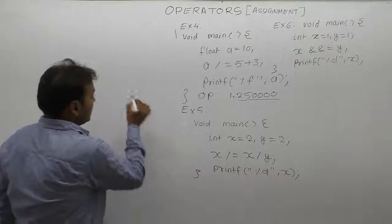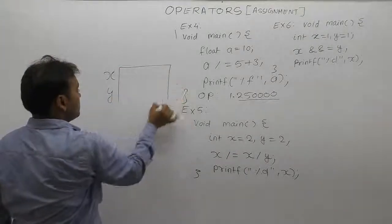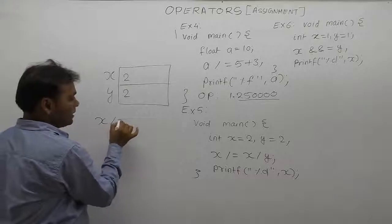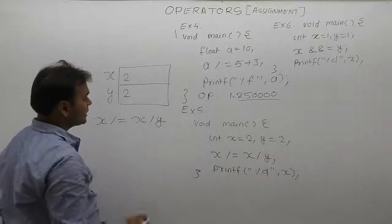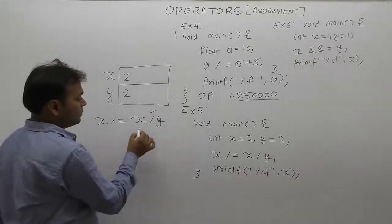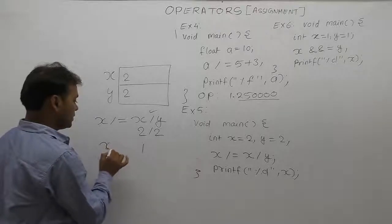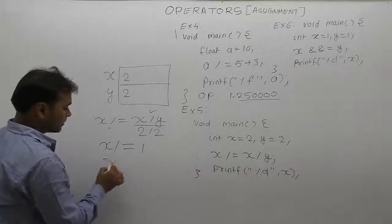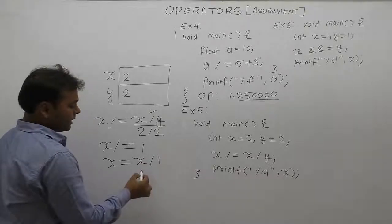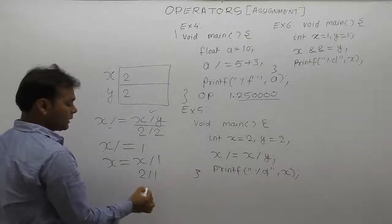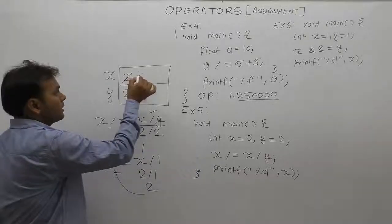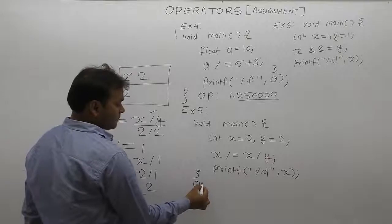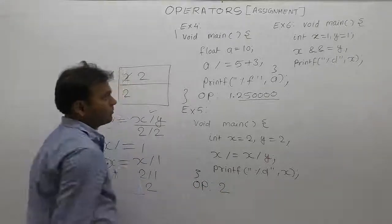In example 5, two variables x and y are declared with initial values of 2 each. The expression is x divided-equals x divided by y. The division inside has highest priority: 2 divided by 2 equals 1. So it becomes x divided-equals 1, which is equivalent to x equals x divided by 1. The current value of x is 2, so 2 divided by 1 is 2. The final output value of x is 2.